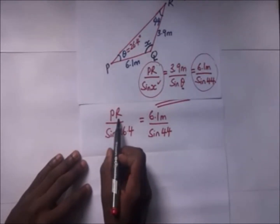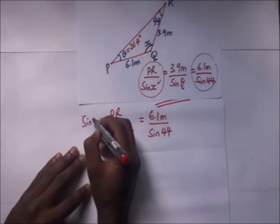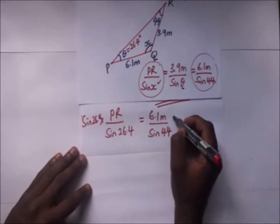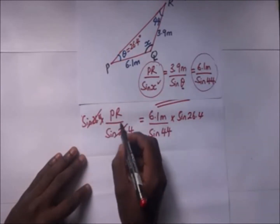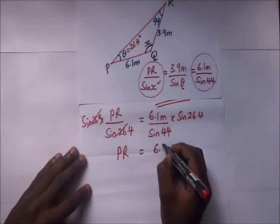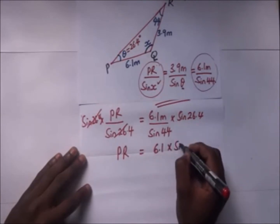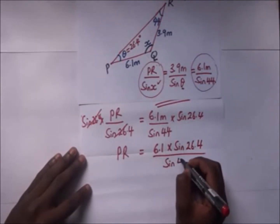So we make PR the subject of the formula. We multiply both sides by sine 26.4. This goes with that, PR is going to give us 6.1 times sine of 26.4 divided by sine of 44.